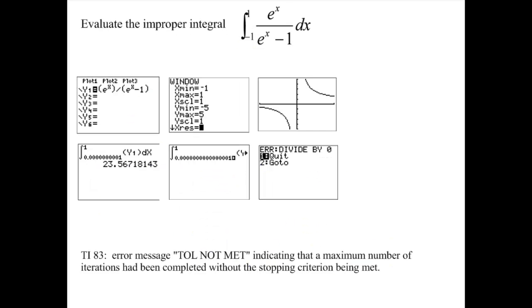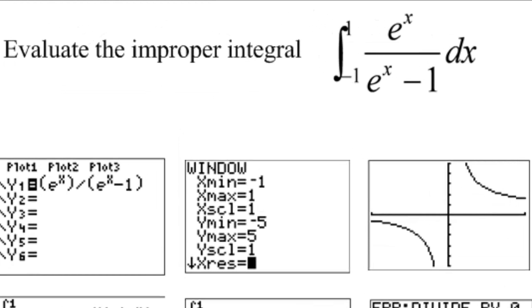So final example. Here we are integrating from negative 1 to 1. And we clearly have a problem in our denominator when x equals 0. So this is not an end point that gives us trouble. It is an interior point. Between negative 1 and 1, at x equals 0, this function has a vertical asymptote. Again, put the function into y1. I changed my x window from negative 1 to 1. And here's the graph.